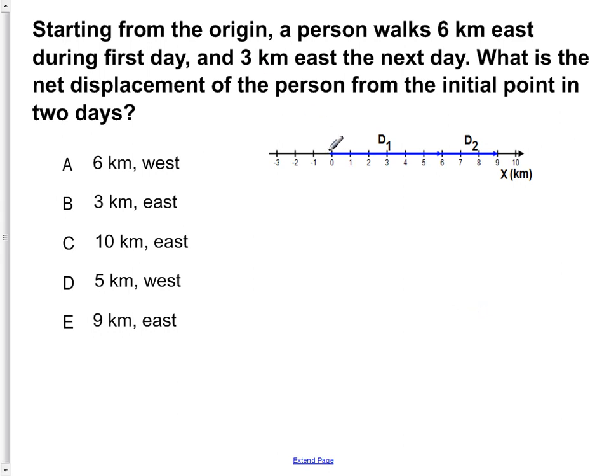So our person is starting here at the origin at zero kilometers. In the first day you're moving a total of six kilometers to the east and in the second day you move a total of three kilometers east.